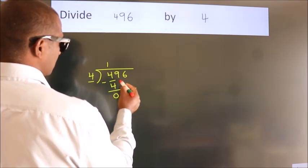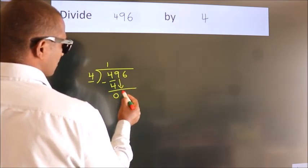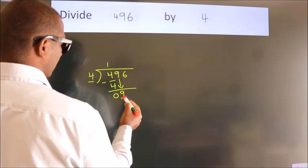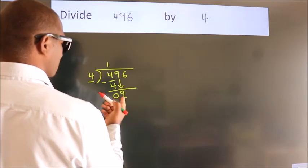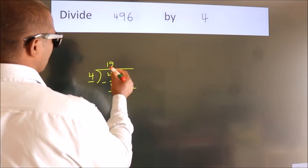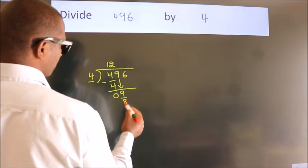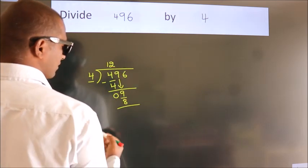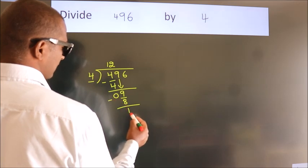After this, bring down the beside number. So 9 down. So 9. A number close to 9 in 4 table is 4 twos, 8. Now, we subtract. We get 1.